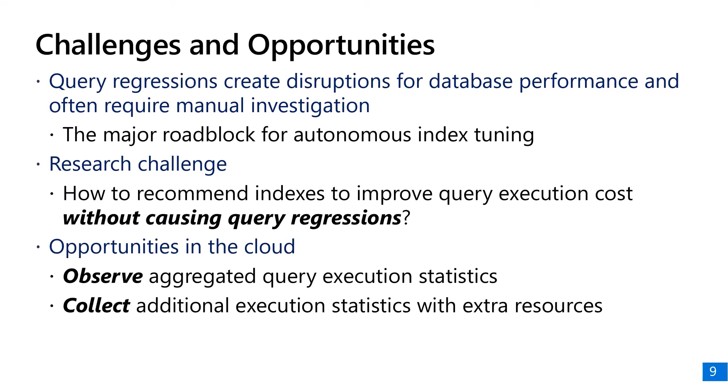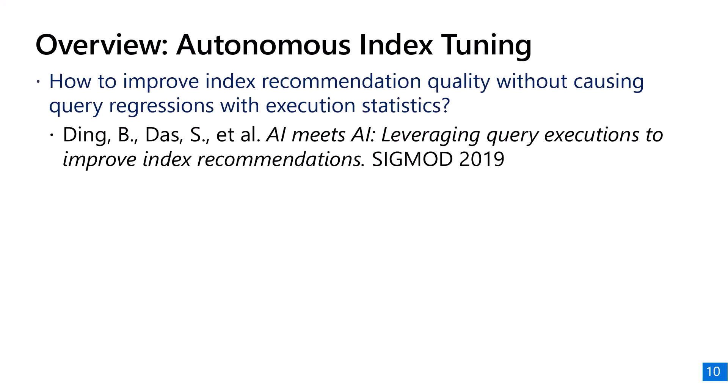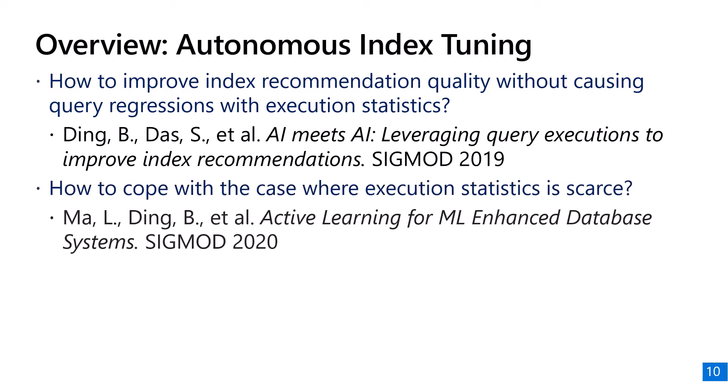Today I'll share two recent works on autonomous index tuning. The first work is about how we recommend indices without causing query regressions, leveraging execution statistics from the databases. Since execution statistics may not always be available, especially with new workloads and new databases, the second work addresses the case where execution statistics are scarce.